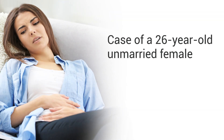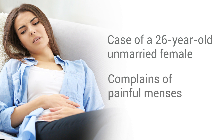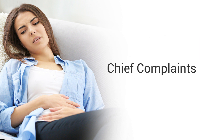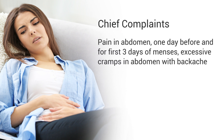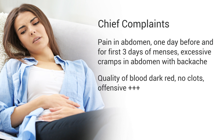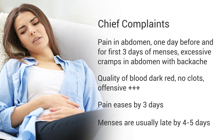This is a case of a 26-year-old unmarried female who complains of painful menses. Her chief complaints are: pain in abdomen one day before and for the first 3 days of menses, excessive cramps in abdomen with backache. Quality of blood: dark red, no clots, offensive 3+. Pain eases by 3 days. Menses are usually late by 4 to 5 days. No complaints post-menses.